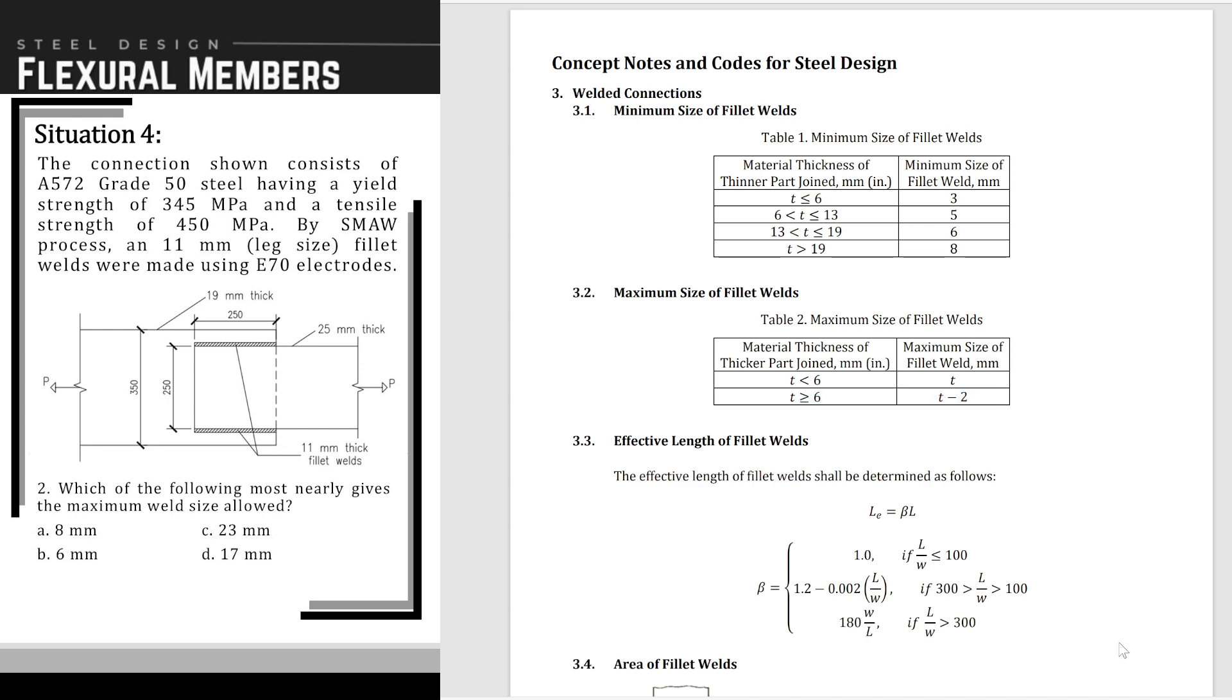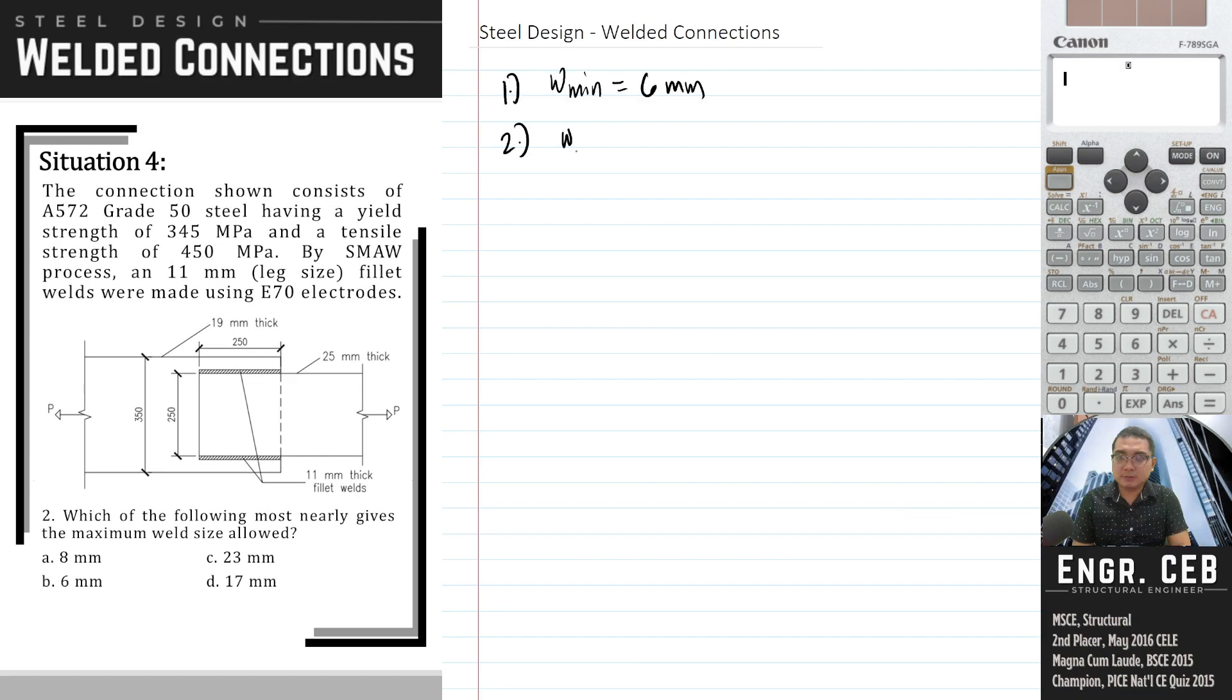Therefore, the maximum size of fillet weld is T minus 2. The maximum weld size is T minus 2, which is based on the thickness of the thicker member: 25 minus 2 equals 23mm. The answer is letter C.